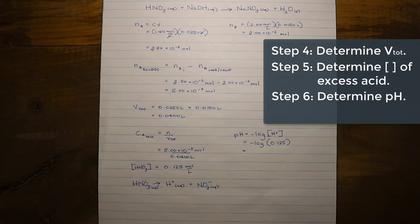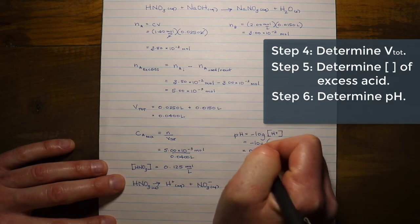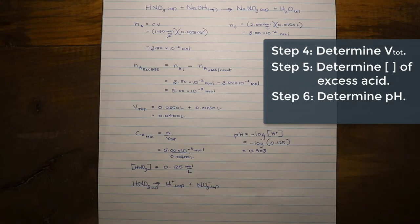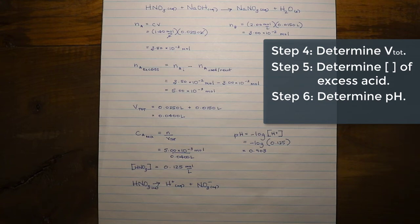On your calculator, type the negative log of 0.125 — some calculators require you to enter the value, hit log, then hit negative. Either way, you should get a pH of 0.903. This value has three significant figures; in pH calculations derived from logarithms, only the digits to the right of the decimal are significant. Note that a pH less than 1, or even a negative pH, is perfectly valid — you can have pH values approaching nearly −2.